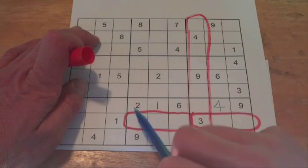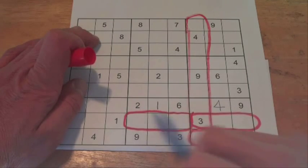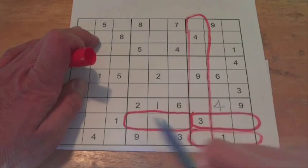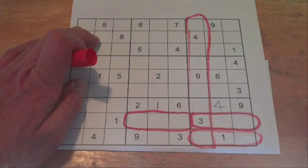So in this case, we've used some cells here where we don't actually know what's going on with them, except that there's a 4 in one of the three. And we've used that to solve a cell in the next box.